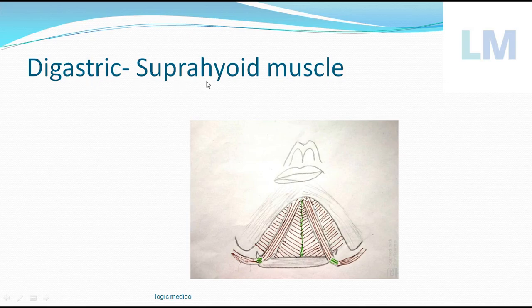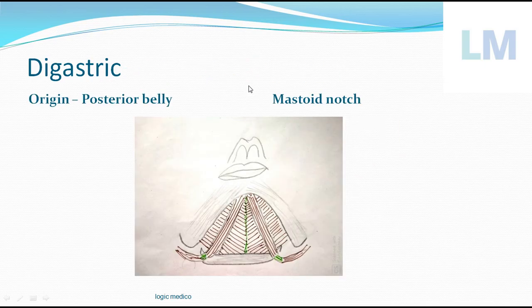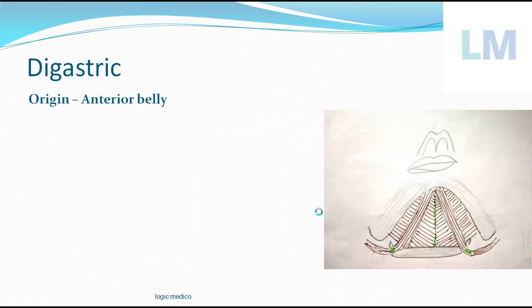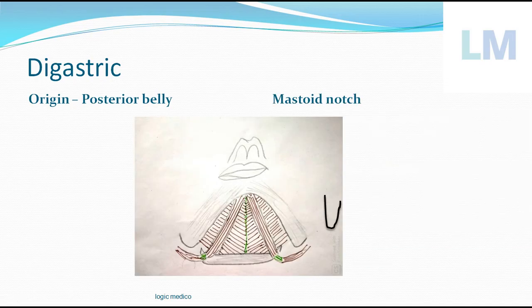Digastric is a suprahyoid group of muscle. We will cover it under the headings: origin, insertion, nerve supply, and action. The origin of the posterior belly: it arises from a notch called the mastoid notch — the inner surface of the mastoid process. This portion is called the mastoid notch, and from there it arises.